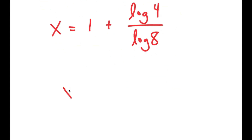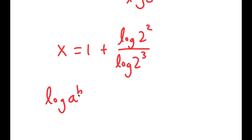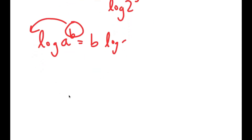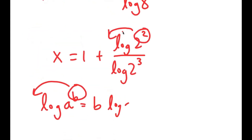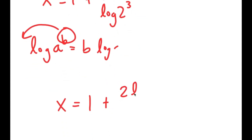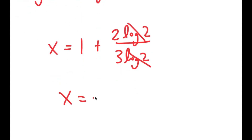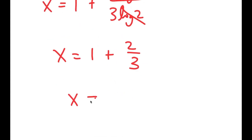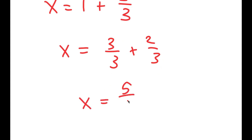Now, log of 4 is the same thing as log of 2 squared, and log of 8 is the same thing as log of 2 to the power of 3. If I have something in the form log of a to the power of b, I can move b to the front, giving b times log a. So I get x is equal to 1 plus 2 times log 2 over 3 times log 2. These two cancel out, and I get x is equal to 1 plus 2 over 3, which equals 3 over 3 plus 2 over 3, which is 5 over 3. So x is 5 over 3.